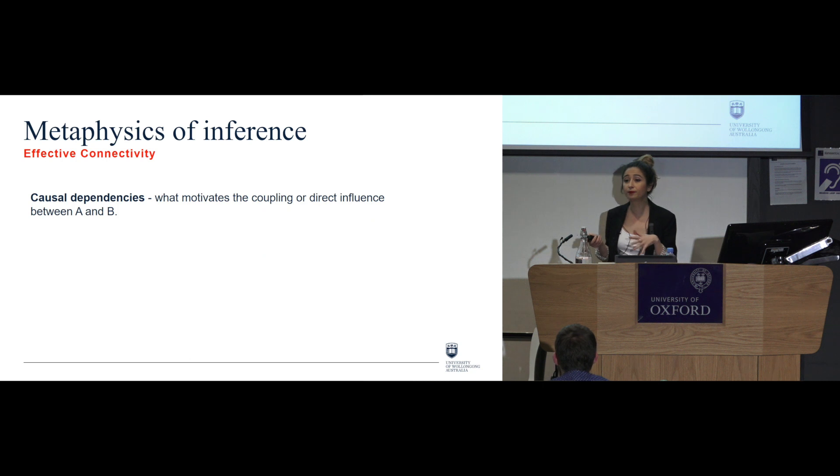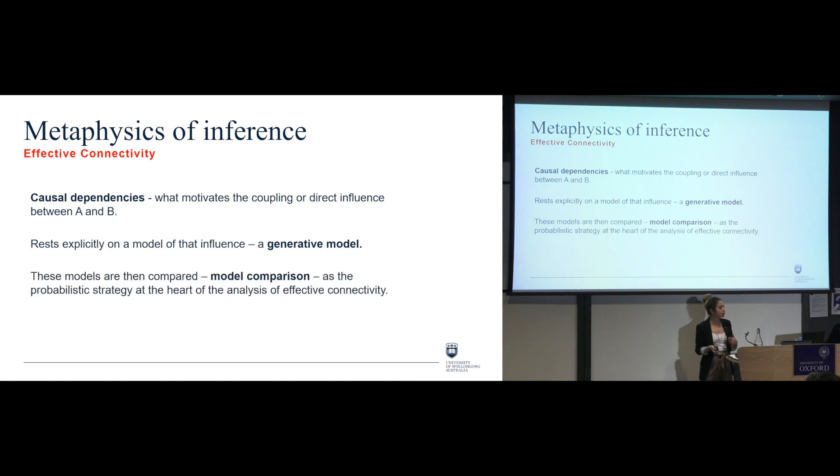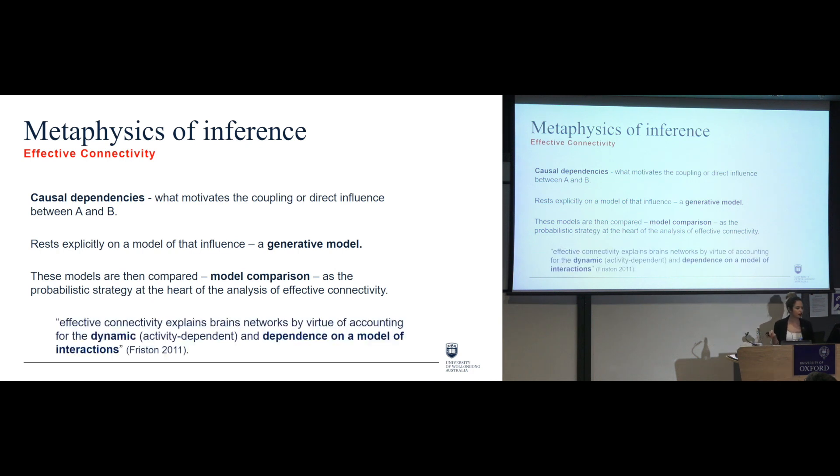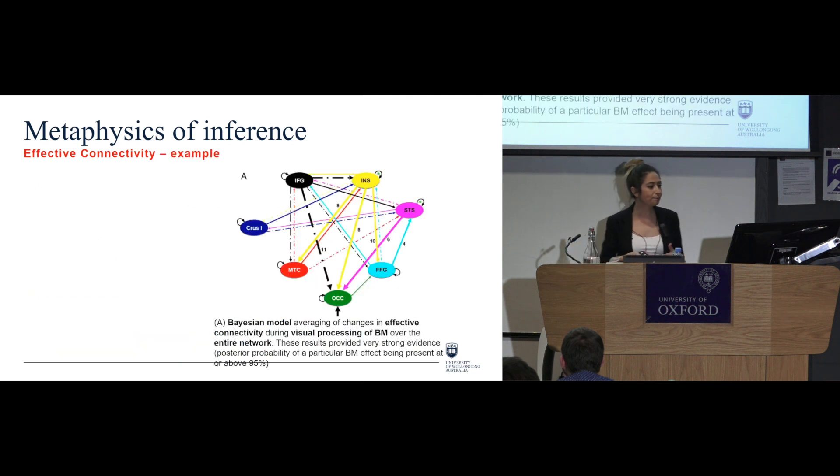On the other hand, we have effective connectivity. And here we look at the causal dependencies, more like sort of what motivates the coupling or the direct influence between, for example, A and B. And this will rest, obviously, explicitly on a model of that influence that is called a generative model. These kind of models, generative models, are then compared as the probabilistic strategy is at the heart of this analysis in effective connectivity. So following Friston, it tells us that effective connectivity explains brains' networks by virtue of accounting for the dynamic, activity dependent and the dependence on a model of these interactions.